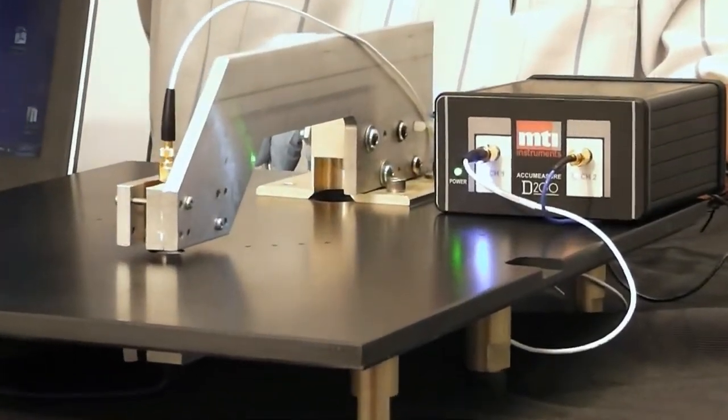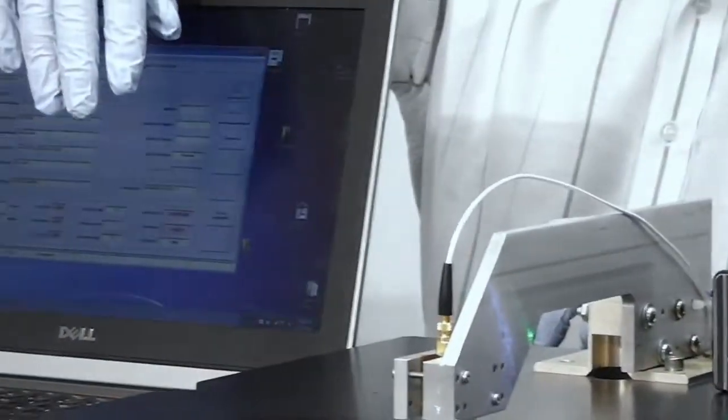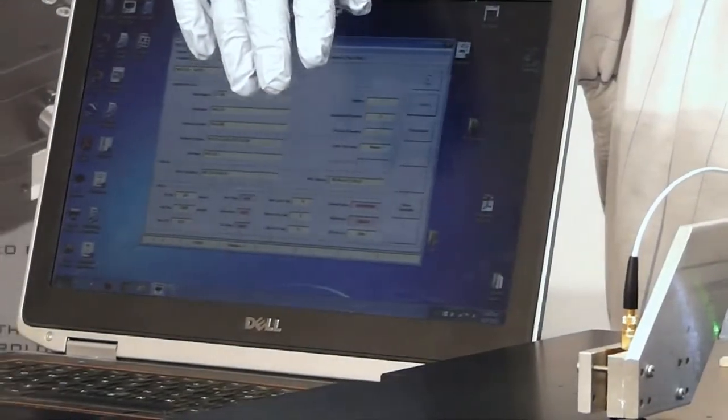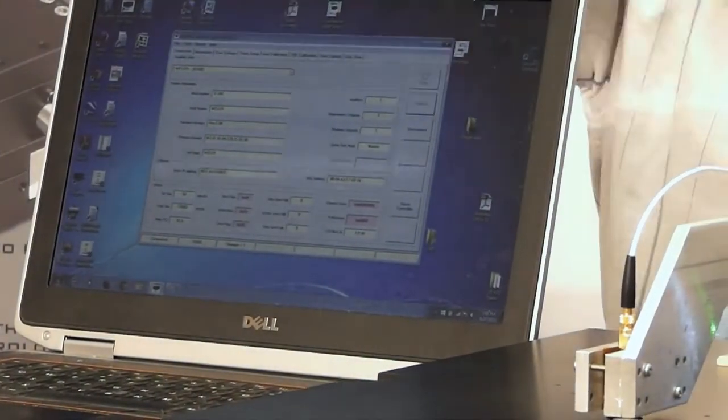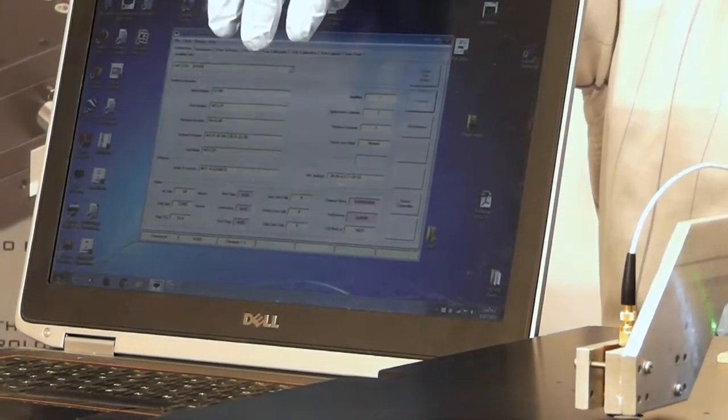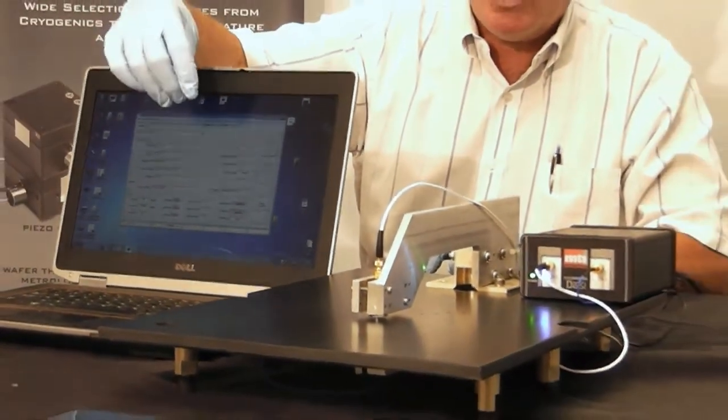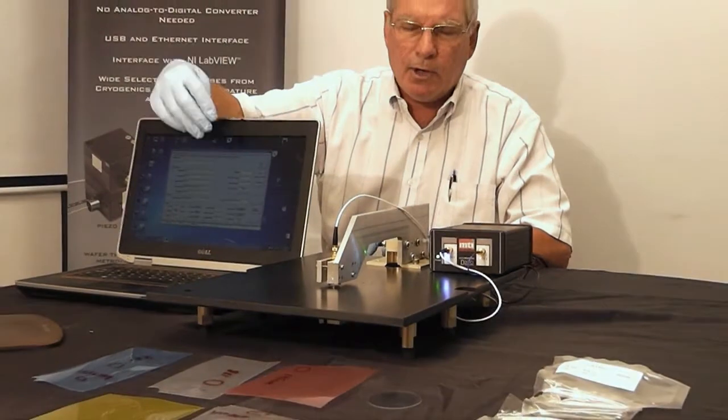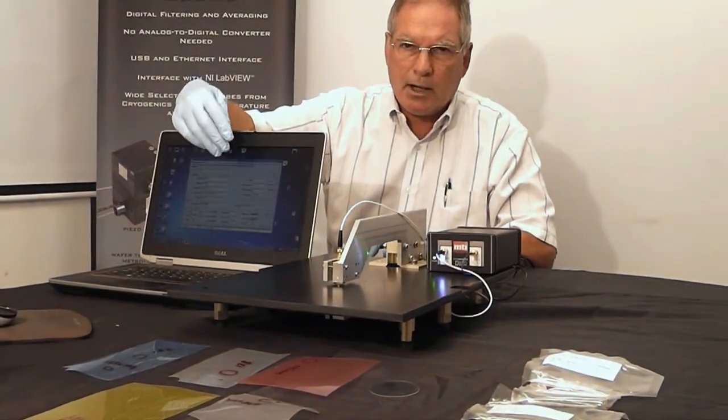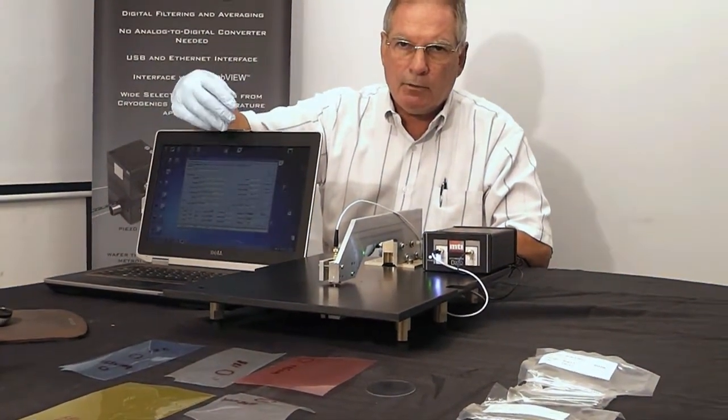Over here to complete the system we have just a regular PC laptop and this PC laptop runs the digital acumeasure basic software and that allows you to make the thickness measurements to be able to record your data and see with a very high degree of accuracy directly in engineering units the thickness of your target.